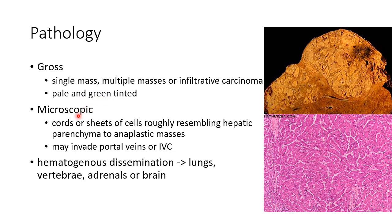Now let us see about the microscopic features. There may be cords or sheets of cells roughly resembling hepatic parenchyma, and there can also be anaplastic masses. This picture shows the trabecular pattern of hepatocellular carcinoma. It may invade portal veins or the inferior vena cava.